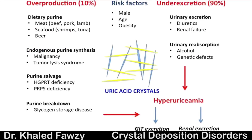Uric acid is overproduced when you eat too much meat — beef, pork, lamb, seafood, shrimps, tuna, mackerel, anchovies. Drinking a lot of beer introduces yeast cells containing purines. Alcohol also decreases the excretion of urates, so urate accumulates in the blood.